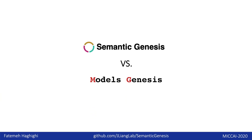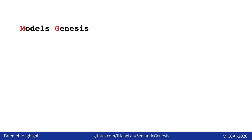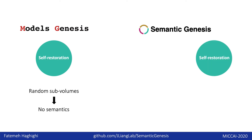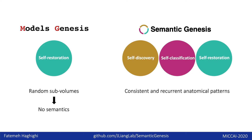Semantic genesis is built on top of models genesis, but it represents a significant advancement in two ways. First, models genesis is designed as a restoration task, so it learns representation from random sub-volumes with no semantics, because it is not possible to discover semantics from random sub-volumes. Semantic genesis shares the self-restoration component with models genesis, but it introduces two novel components — self-discovery and self-classification — to learn semantics from consistent and recurrent anatomical patterns.